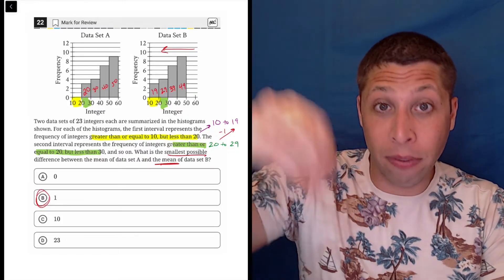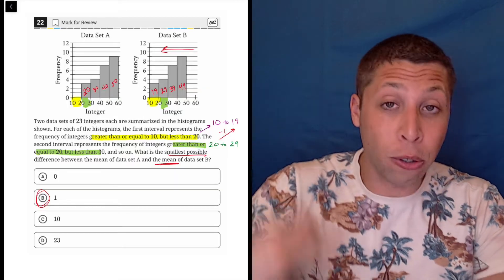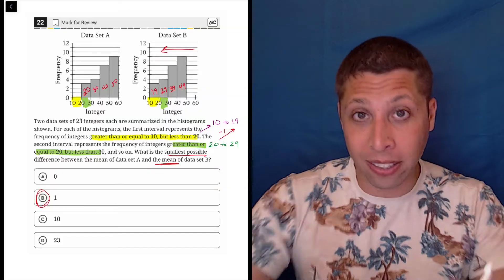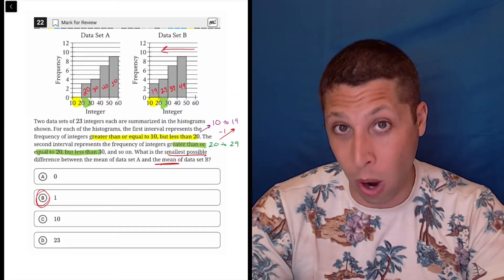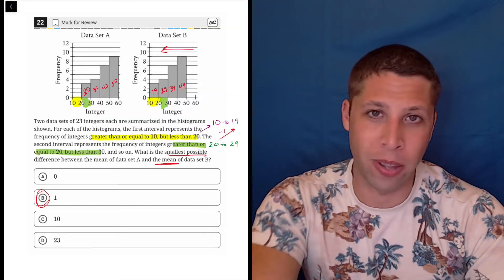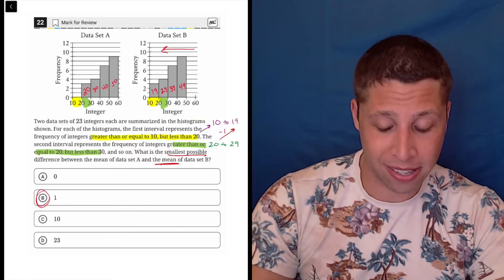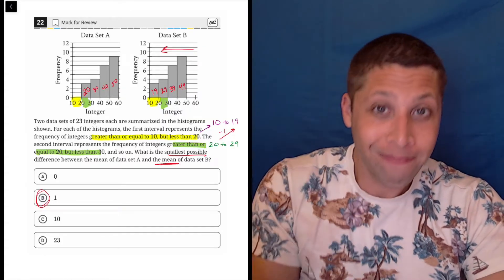And now we actually could, if we wanted to, now that we've kind of given these points specific values, we could calculate the mean for each set and actually see that, yes, the difference is one. But you really don't want to have to do that for this kind of question. This is very conceptual, which I don't love. I hate that on the SAT, but sometimes you got to do it.